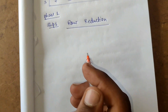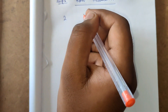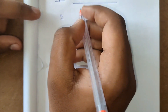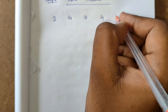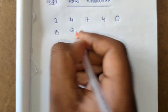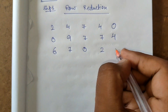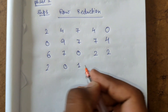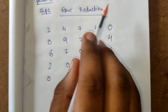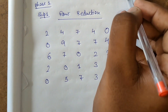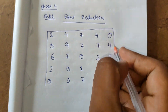Now we subtract the row minimum from all elements in that row to get a new table. So 9−7=2, 11−7=4, 14−7=7, and so on for all rows. After subtracting the corresponding row minima we obtain the reduced row table.